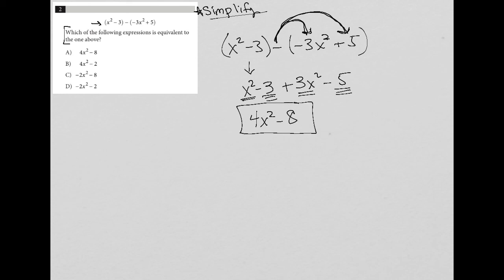Okay, so there's my simplified version of the original expression. So now I'm going to read the question. Which of the following expressions is equivalent to the one above? Well, there we go. Answer choice A, four x squared minus eight.